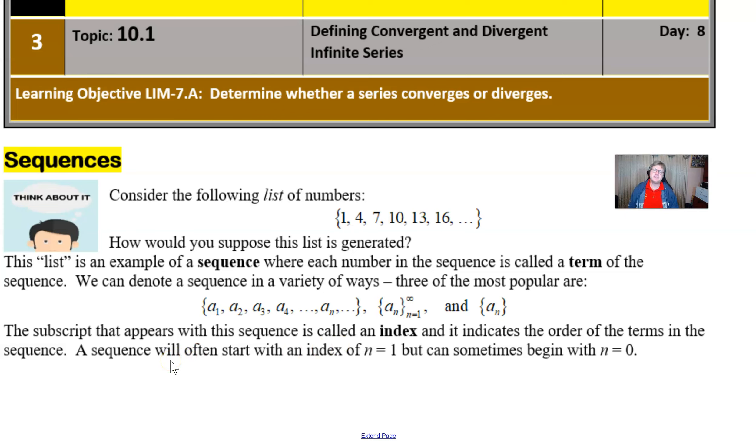very similar to the index that you saw with your summation expressions. A sequence often starts with an index of n equal 1, but it doesn't have to. They can sometimes start with 0, and I know that can get a little confusing. So that's sort of your basic building blocks of the notation.